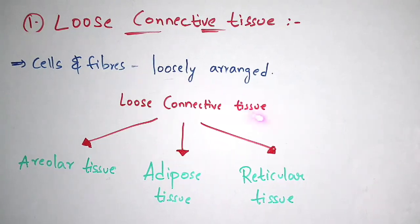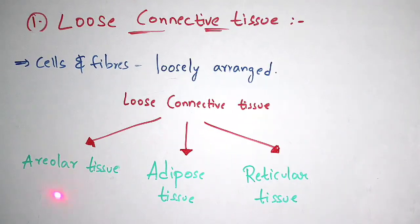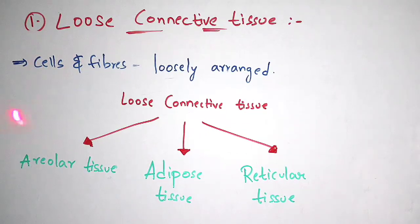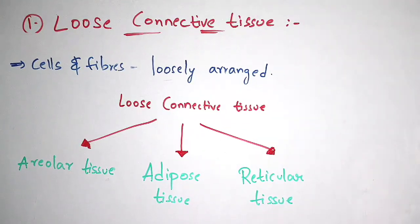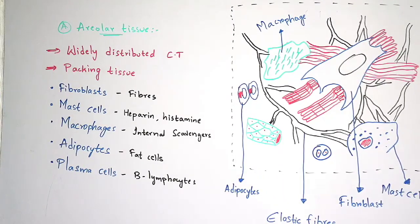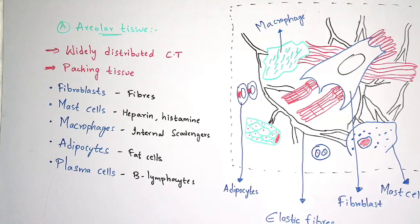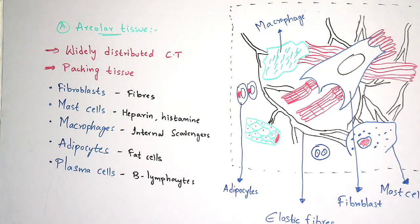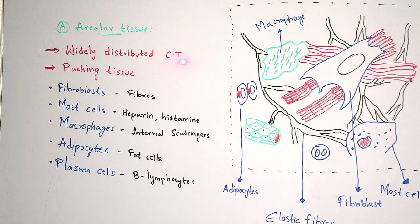Loose connective tissue is classified into three types: areolar tissue, adipose tissue, and reticular tissue. Areolar tissue is one of the most widely distributed connective tissues that can be seen in the human body. It forms the packing tissue in almost all the organs.